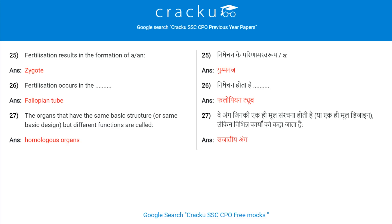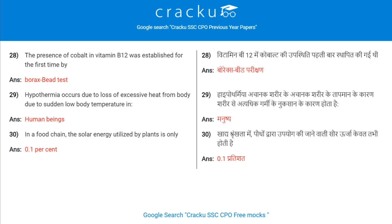The organs that have the same basic structure but different functions are called Homologous organs. The presence of cobalt in vitamin B12 was established for the first time by the Borax bead test. Hypothermia occurs due to loss of excessive heat from the body due to sudden low body temperature in human beings. In a food chain, the solar energy utilized by plants is only 0.1%.